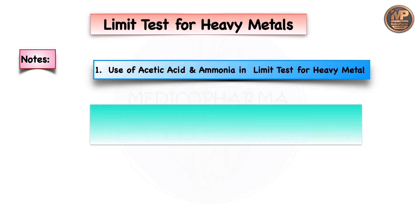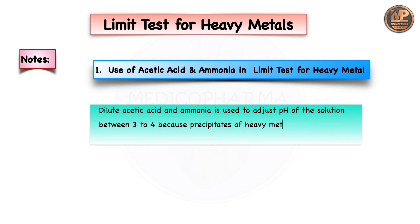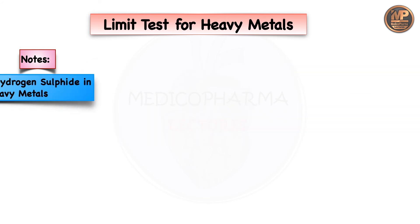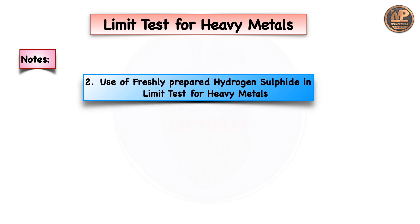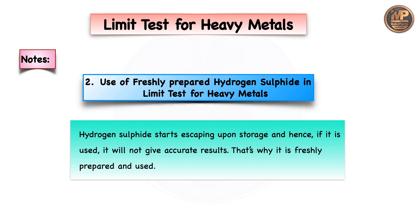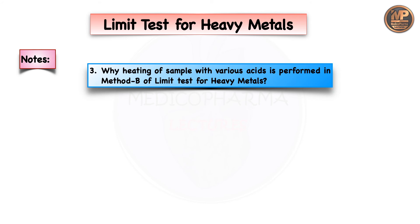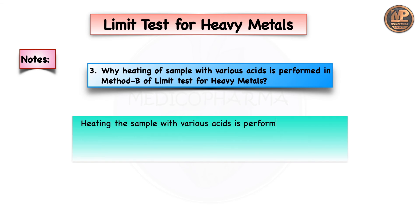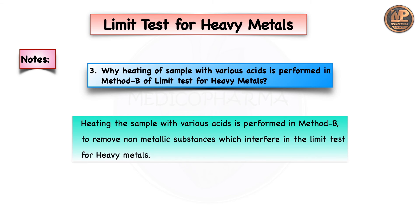Important notes: First, dilute acetic acid and ammonia are used to adjust pH between 3 to 4 because precipitates of heavy metal sulfide are stable in this pH range. Second, freshly prepared hydrogen sulfide is used because hydrogen sulfide starts escaping upon storage and would not give accurate results. Third, heating the sample with various acids in Method B is performed to remove non-metallic substances that would interfere in the limit test by producing color.